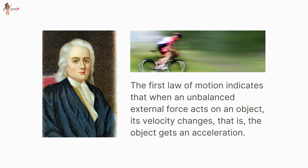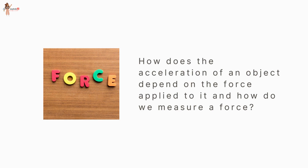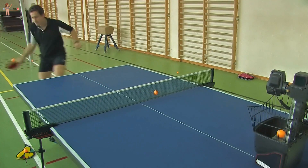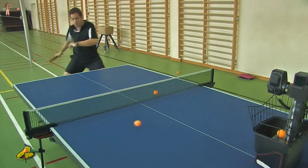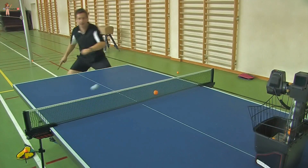Second Law of Motion. The First Law of Motion indicates that when an unbalanced external force acts on an object, its velocity changes — the object gets an acceleration. We would now like to study how the acceleration of an object depends on the force applied and how we measure a force. During the game of table tennis, if the ball hits a player it doesn't hurt much. On the other hand, when a fast-moving cricket ball hits a spectator, it may hurt him.